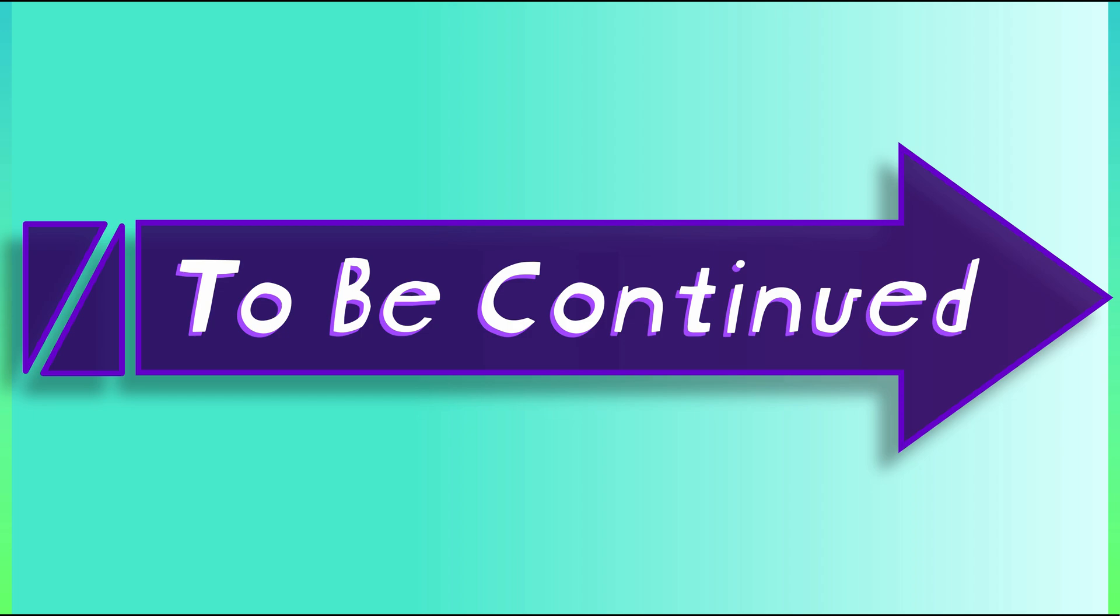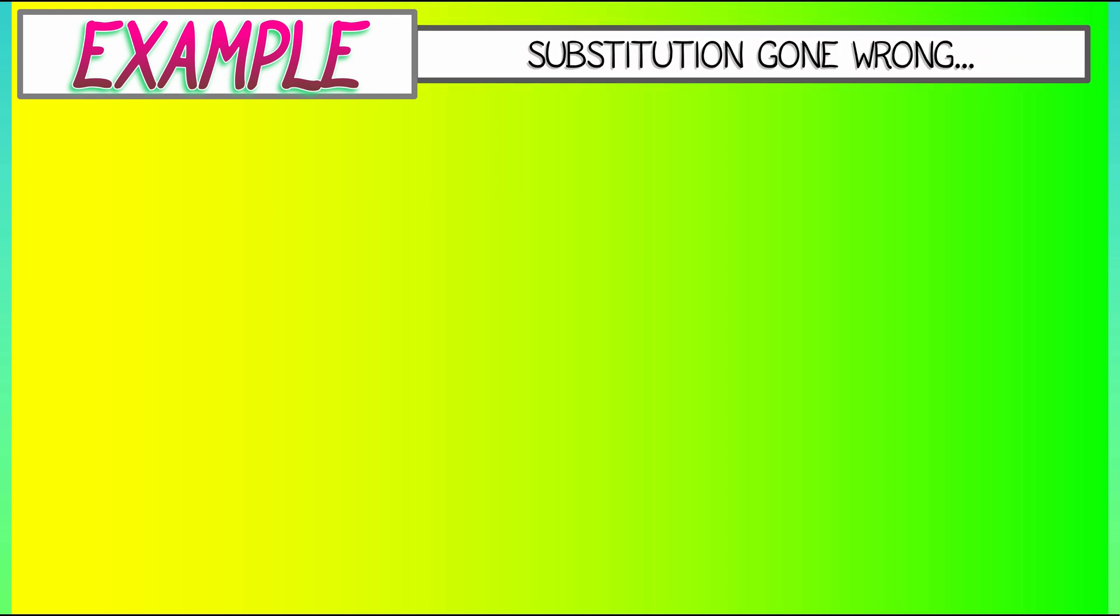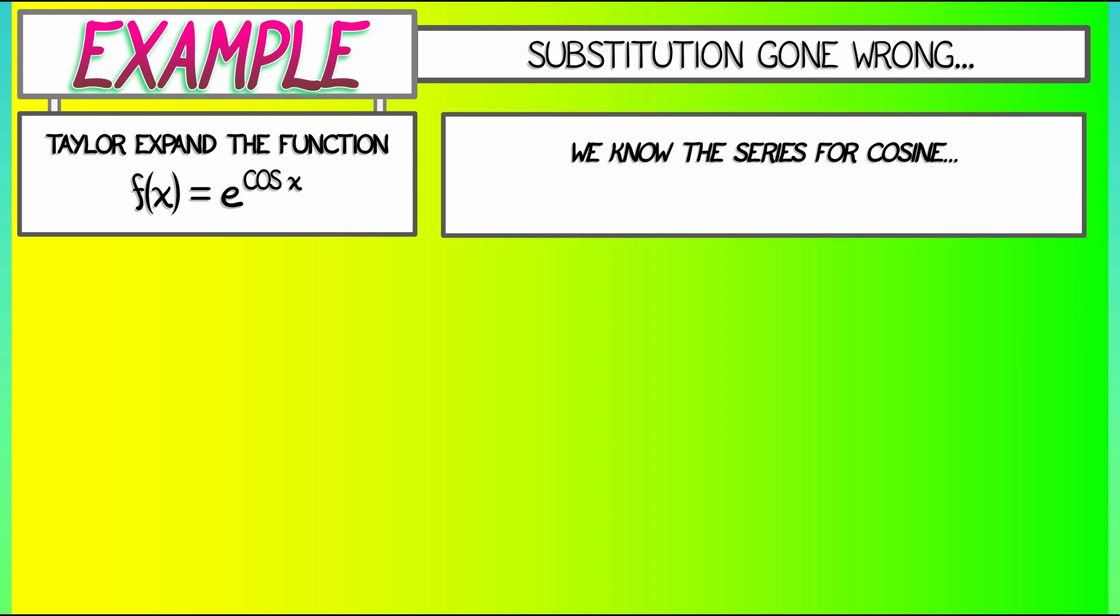Consider the following example. Let's Taylor expand the function e to the cosine of x. Now, this looks a lot like an example that we've done already where everything worked out fine. And everything should work out fine. We know this series for cosine, it's totally good. We know the exponential series. That one is golden. No problems with derivatives blowing up or anything like that. Everything is going to be fine.